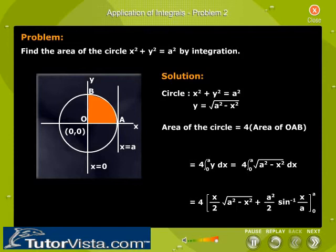This is equal to 4 times x over 2 times the square root of a squared minus x squared, plus a squared over 2 times sin inverse of x over a, evaluated from 0 to a.